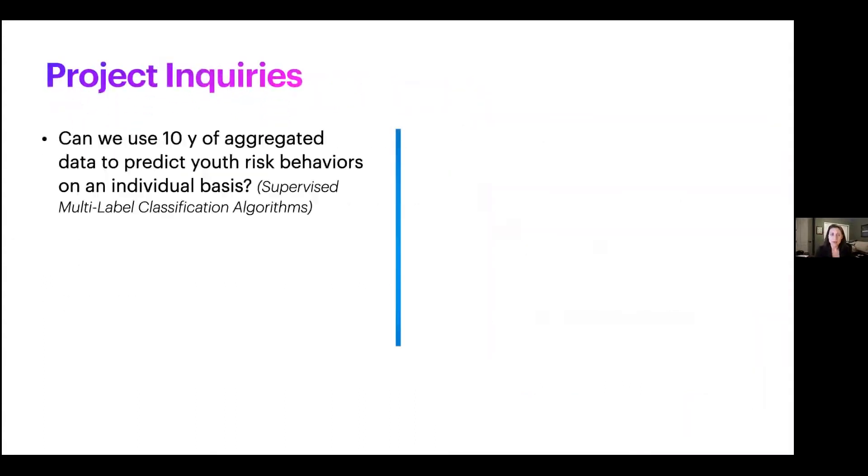For this project, however, I really wanted to dig down a little bit further into a more individualized basis using 10 years of aggregated data. And my question was, can we predict youth risk behaviors using that with supervised multi-label classification algorithms? The targets that I had for this specific project are three questions from the survey. The first, have you ever had sex? The second, have you felt sad or hopeless for two weeks in a row, which could be a good indicator for suicidal tendencies? And lastly, have you ever tried cigarettes?